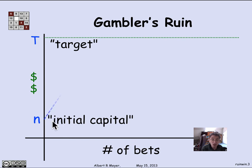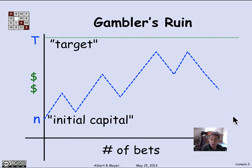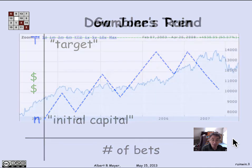The game ends when you track, step by step, your fluctuating amount of money until you either hit the upper boundary or the lower boundary. You've won if you reach your target and terminate at the top boundary, or you're ruined — lost, gone bust, bankrupt — if you run out of money and hit the bottom boundary.